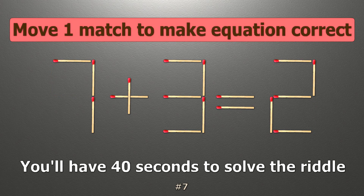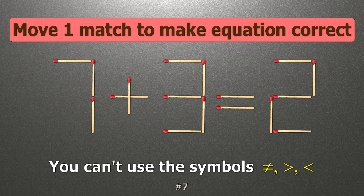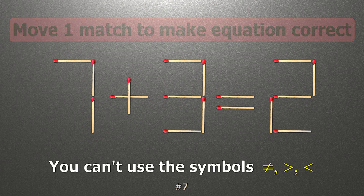We have the equality 7 plus 3 equals 2. Our equality is wrong. We need to move one match to make our equality correct.